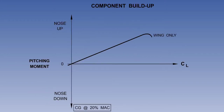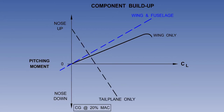The graph shows a typical build-up of components and their effect on longitudinal static stability. The wing is destabilising. The wing and the fuselage together are even more destabilising. The tailplane contribution is very stabilising, and when all components are considered together, the aeroplane has the required degree of longitudinal static stability.